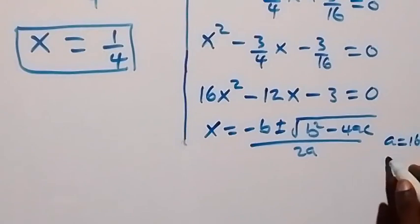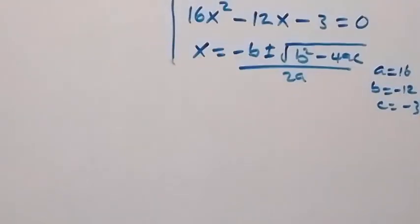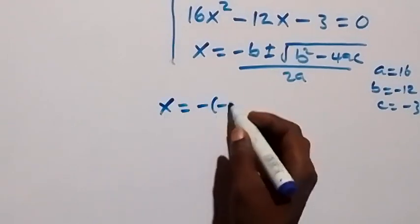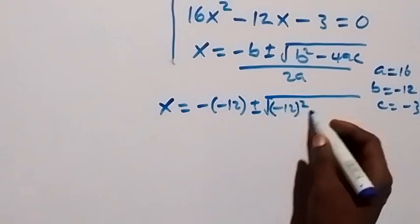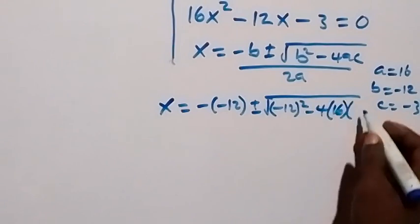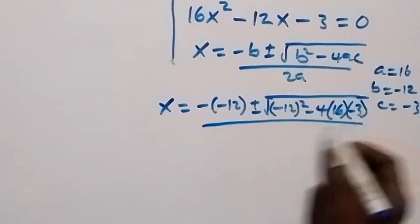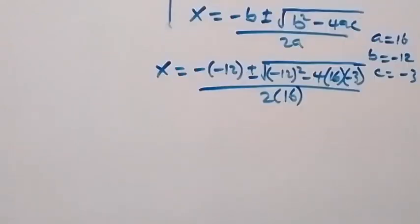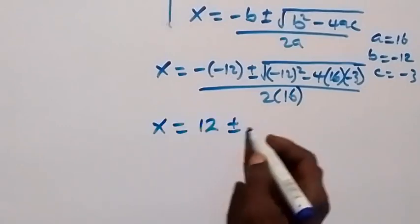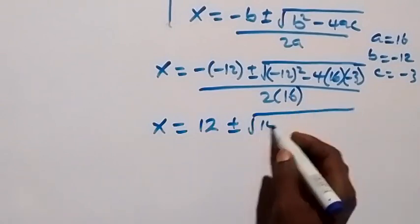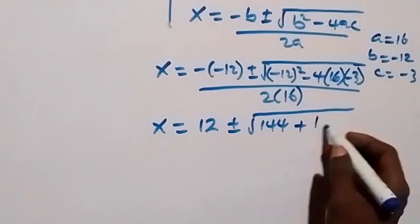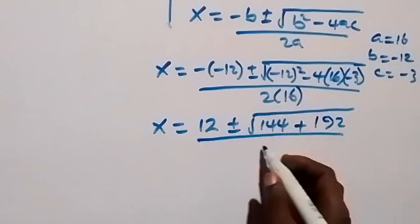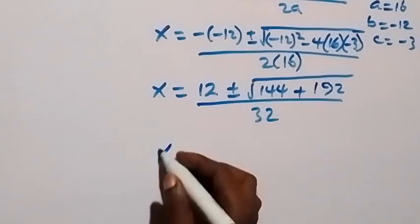We can solve this using the quadratic formula: x equals minus b plus or minus square root of b squared minus 4ac, over 2a. Here a is 16, b is minus 12, and c is minus 3. What we have then becomes x equals minus minus 12 plus or minus square root of minus 12 squared, minus 4 times 16 times minus 3, over 2 times 16.